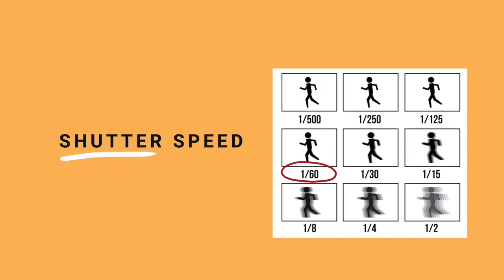Shutter speed is how long an image is exposed to light. It can be milliseconds or even minutes. This controls how blurred or clear your video looks. Cinematic videos usually mimic our eyes' natural shutter speed — that is, things blur when they're moving too fast. Ideally, you want your shutter speed to be 1/50th.